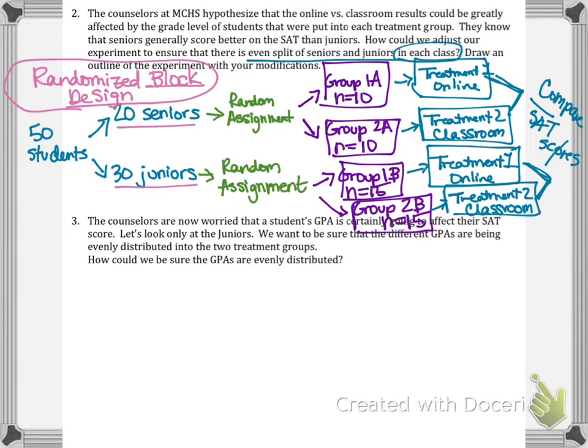For number three, counselors are also worried that GPA could affect SAT score, so let's look at only juniors. We want to be sure that different GPAs are distributed evenly into the two treatment groups. How could we ensure that GPAs are evenly distributed?